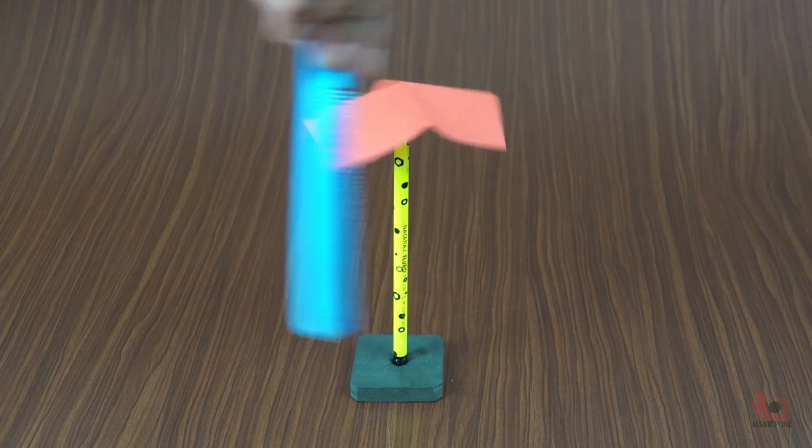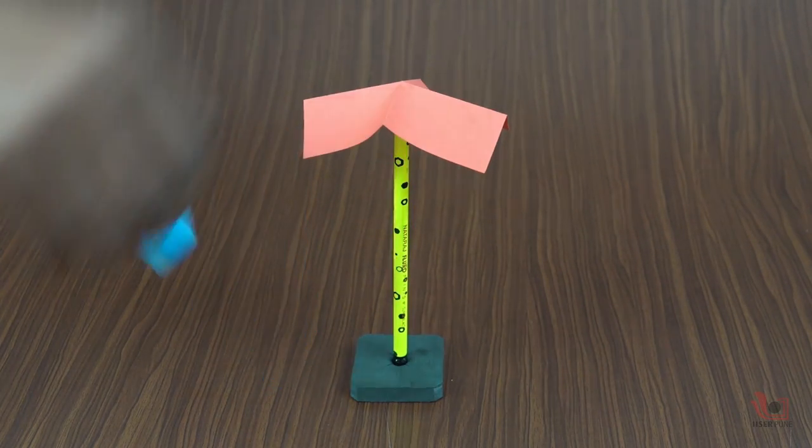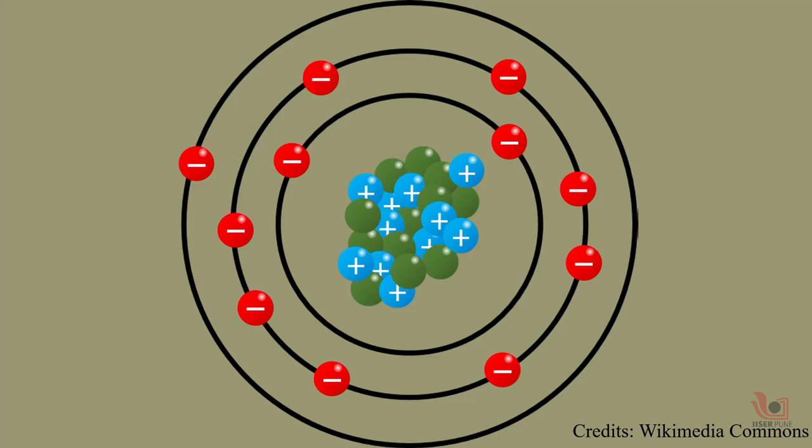First, let's understand what static electricity is. Static electricity is an imbalance between the electric charges in an object. It's an imbalance between the negative and the positive charges in the objects.